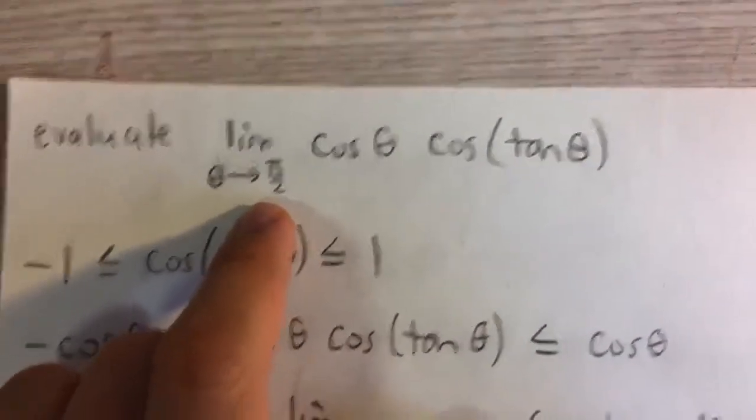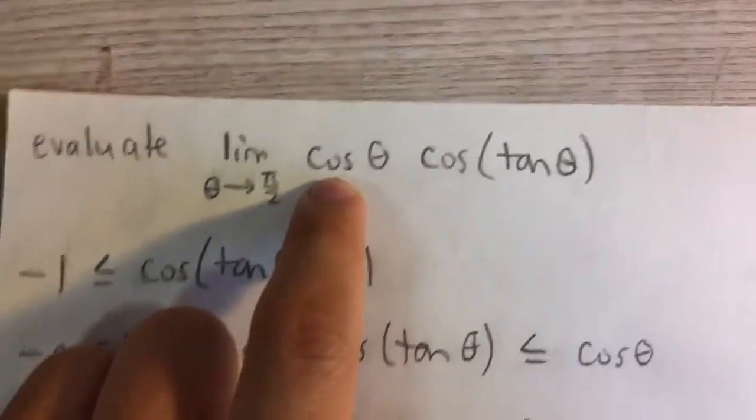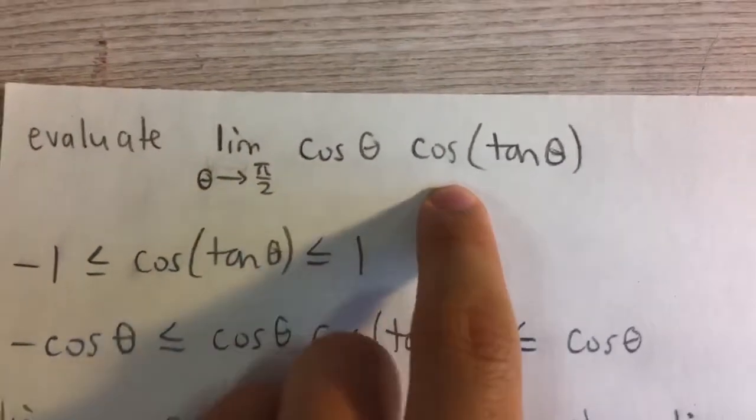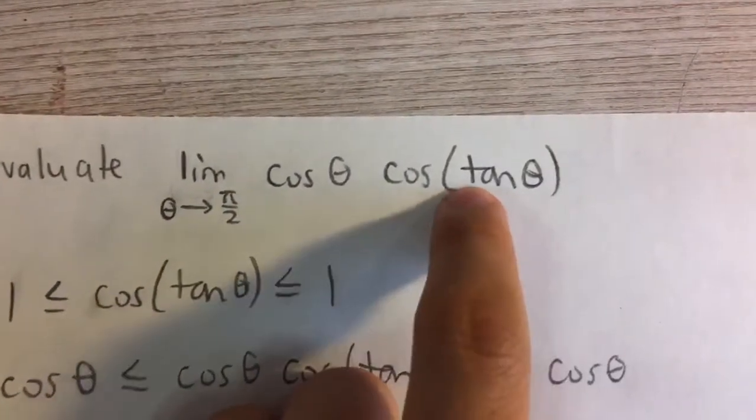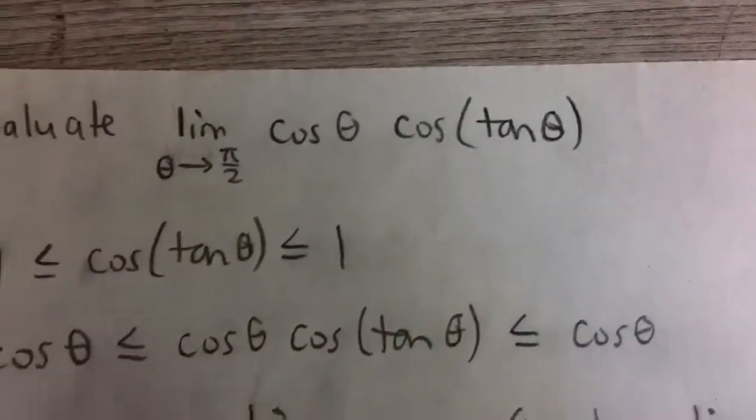Now notice first off if we plug in pi over 2 that will be cosine pi over 2 which is zero and cosine of tangent theta which tangent of pi over 2 we notice is undefined.